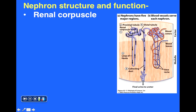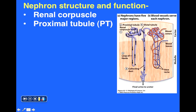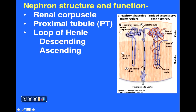Beginning with the renal corpuscle and following the path of a nephron, we come across a twisted convoluted region called the proximal tubule, or PT. Continuing along, next we see a long structure which dips down into the medulla — that's the loop of Henle. We can identify the descending limb dipping down into the medulla and the ascending limb going back up toward the cortex.